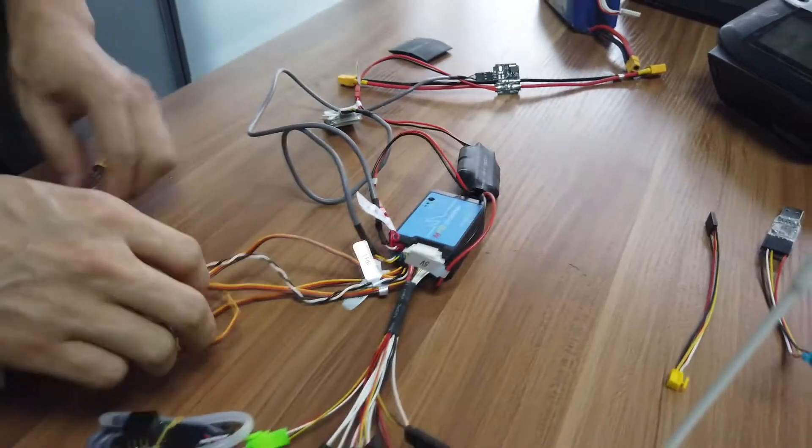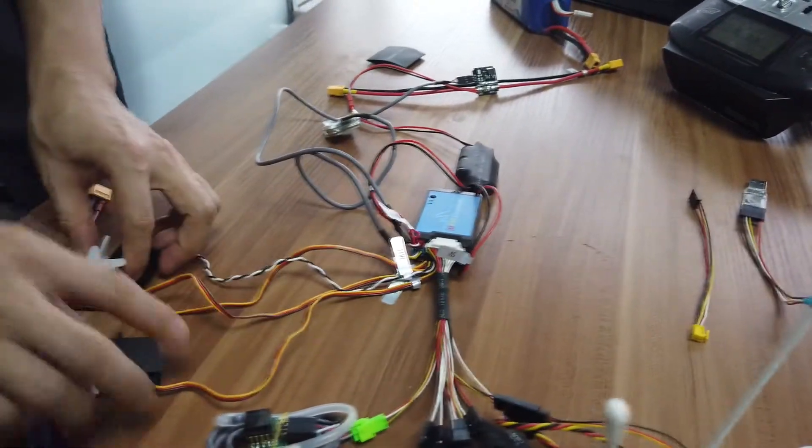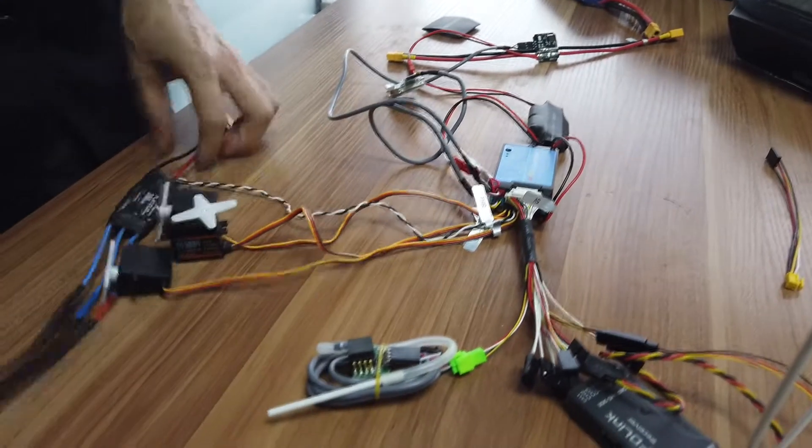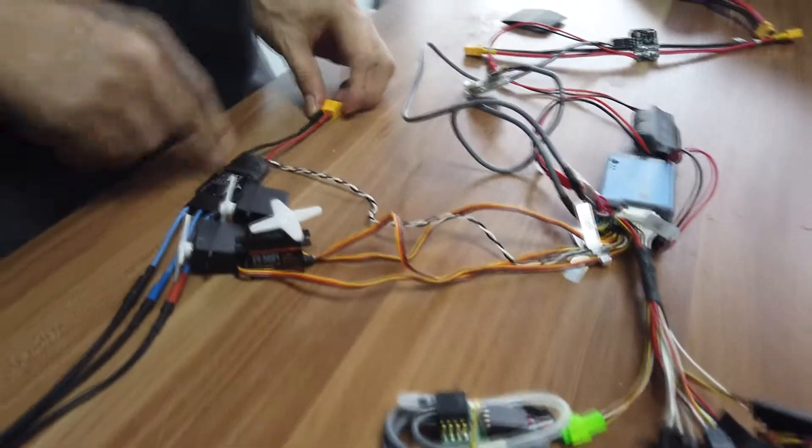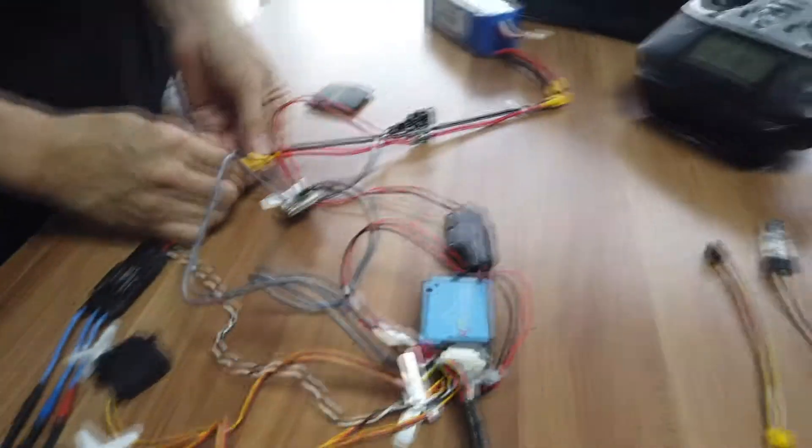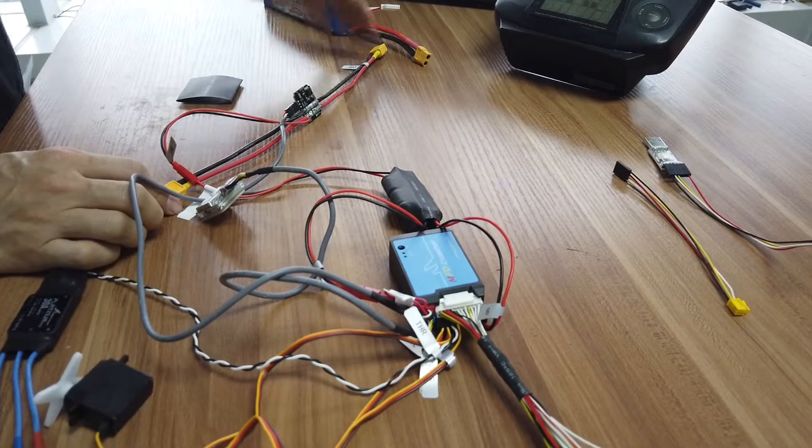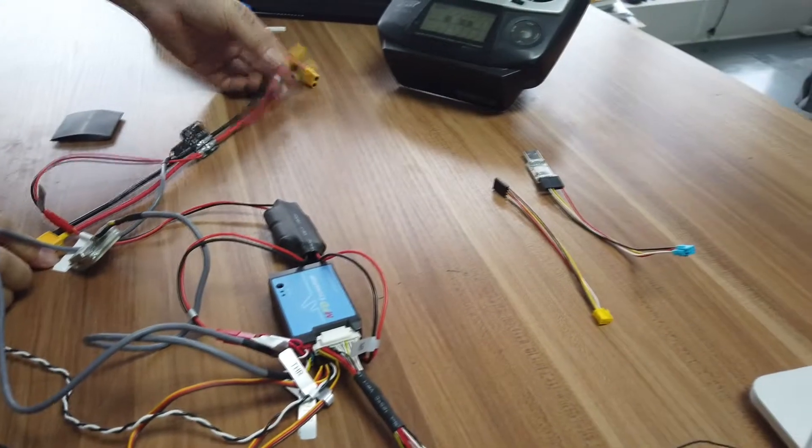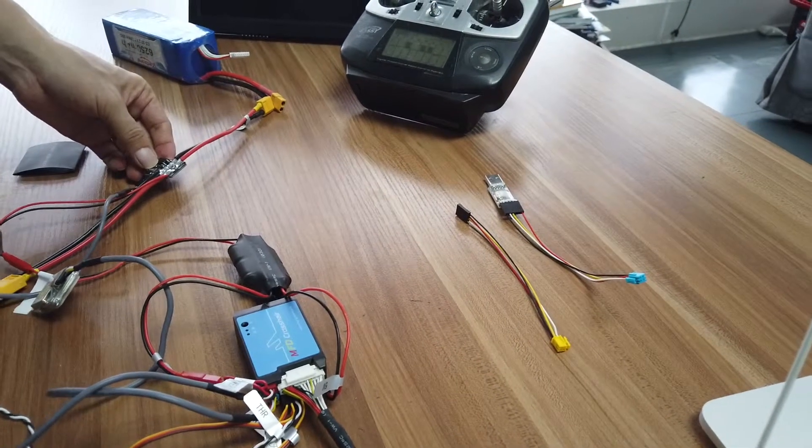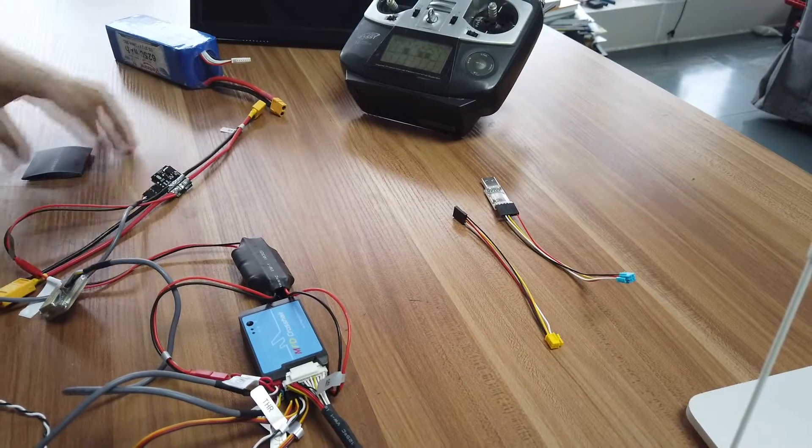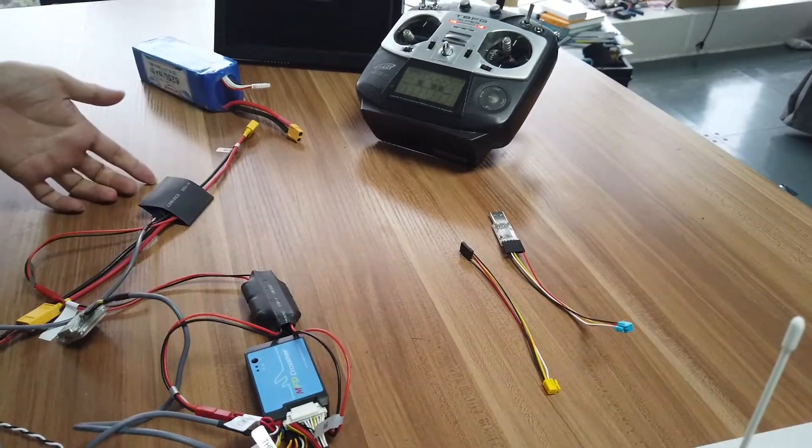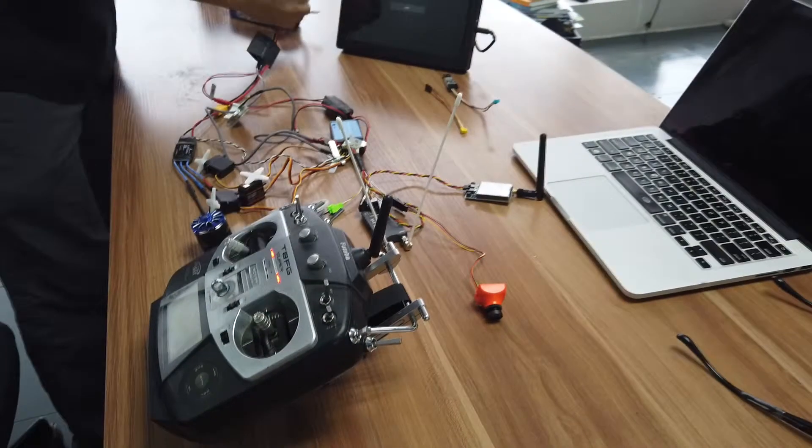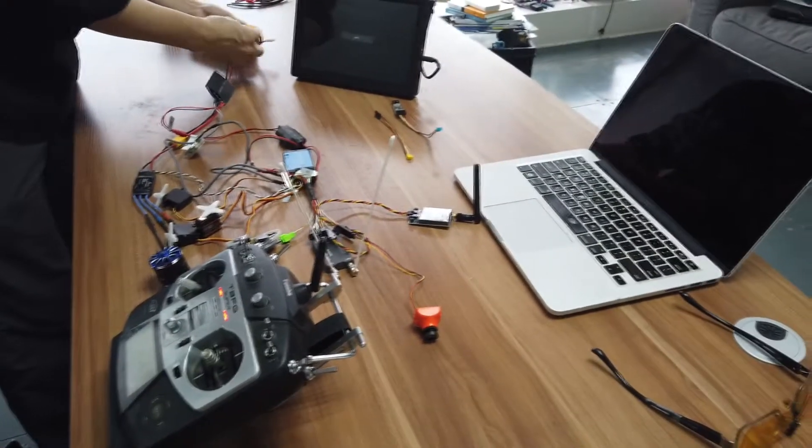Okay, all output servos connected. This is ESC. So the battery connects to this connector and this is the current sensor and this is for ESC. After you test everything you can shrink this. Now you power on the whole system.